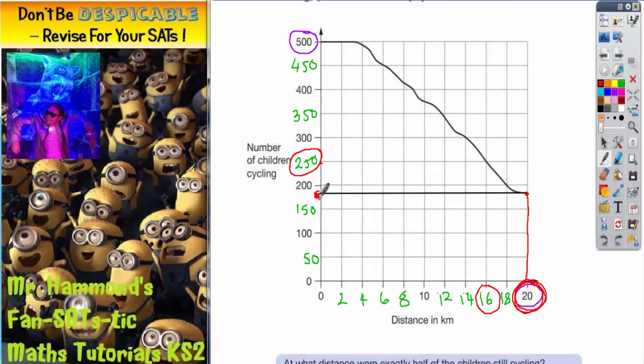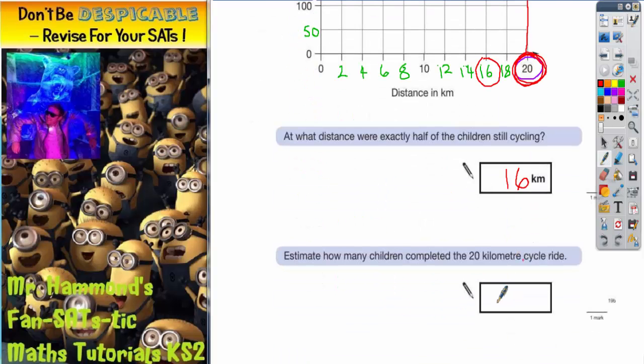And it's between 150 and 200. Now it's not quite central between, it's not quite 175. It's a little bit higher than that. So my estimate is going to be 180 children.